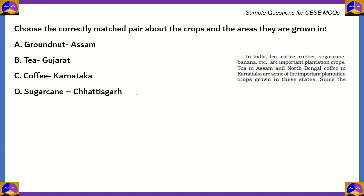How do we solve this question? Well, let's eliminate the options. Option A says groundnut grows in Assam, whereas in reality, groundnut grows in the state of Gujarat. Therefore, option A is incorrect because it isn't correctly matched.